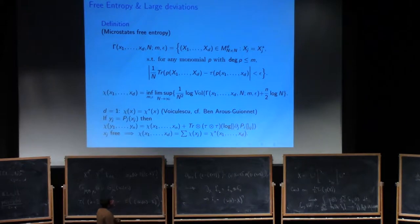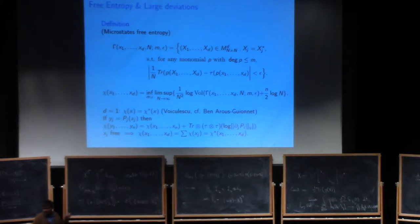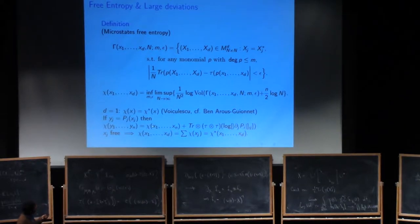And somehow this computation can be phrased in a different way. This is what was done in a fundamental paper of Ben Arous and Alice Guionet, who repackaged this as a large deviation principle. So this χ becomes a rate function in that approach. This is, again, the case of one matrix, D equals one.